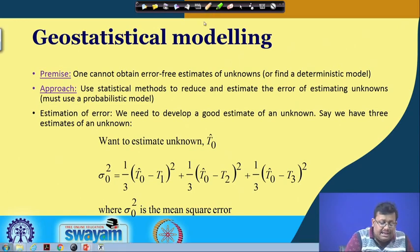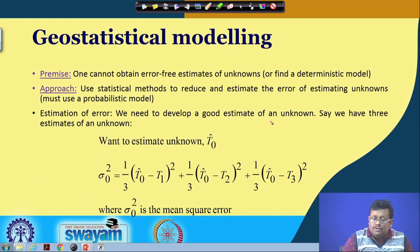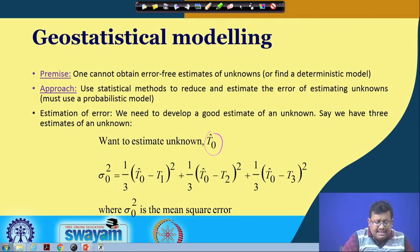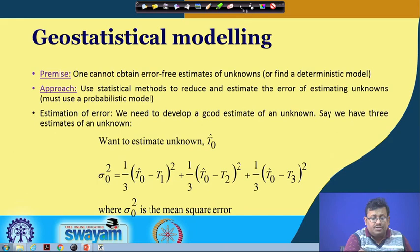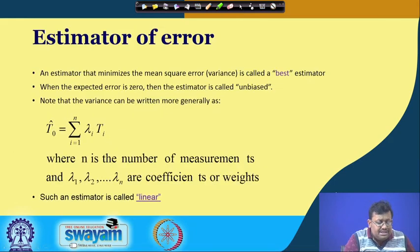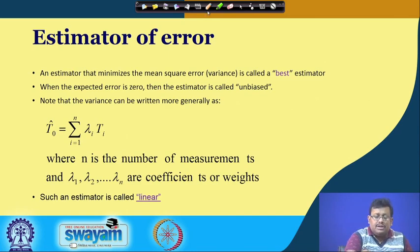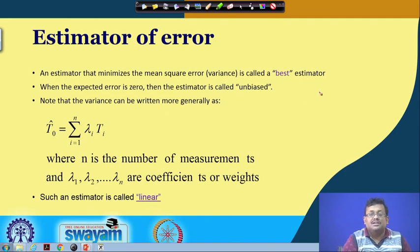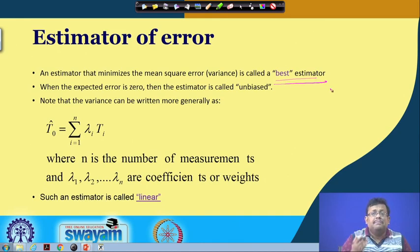In estimation of error, we need to develop a good estimate of the unknown. Say we have three estimates of an unknown — one to estimate t-cap-0. This has to be done by variance measurements, so sigma-0-squared is the mean square error. The estimator that minimizes the mean square error or variance is called the best estimator.